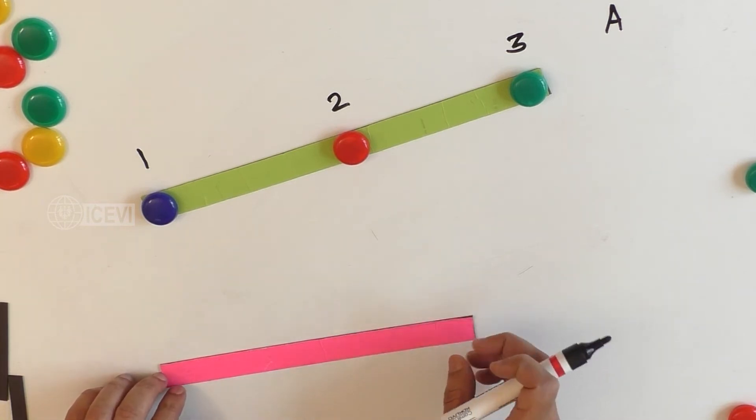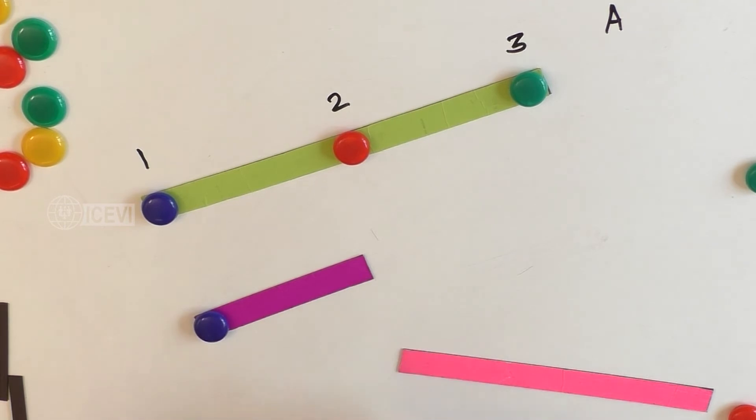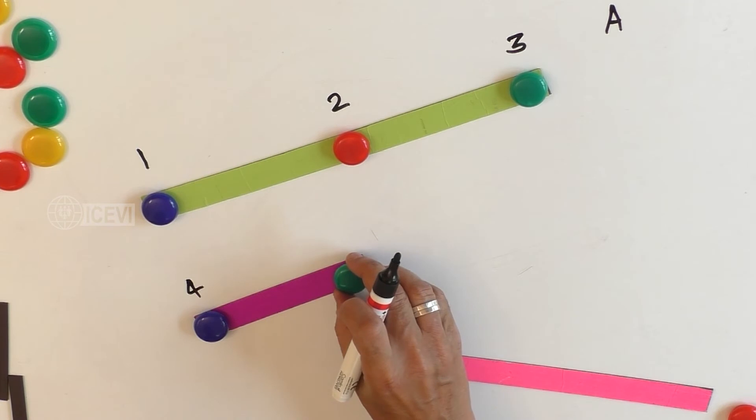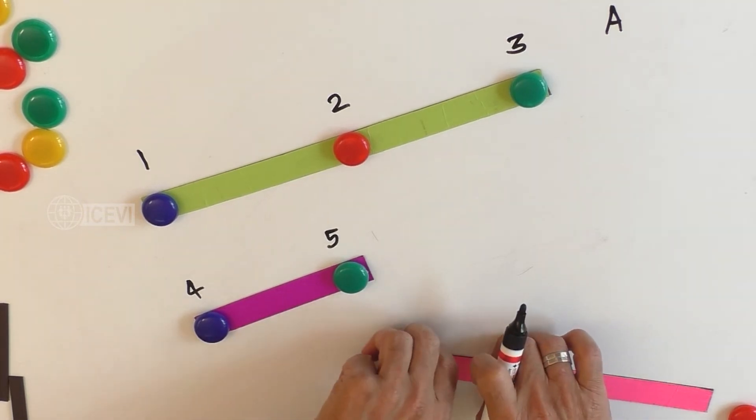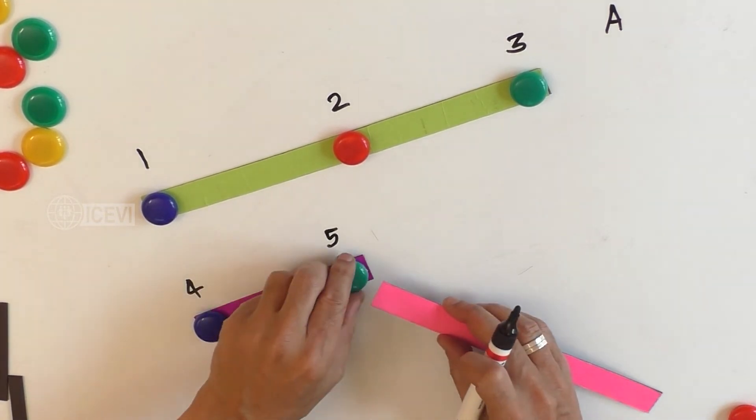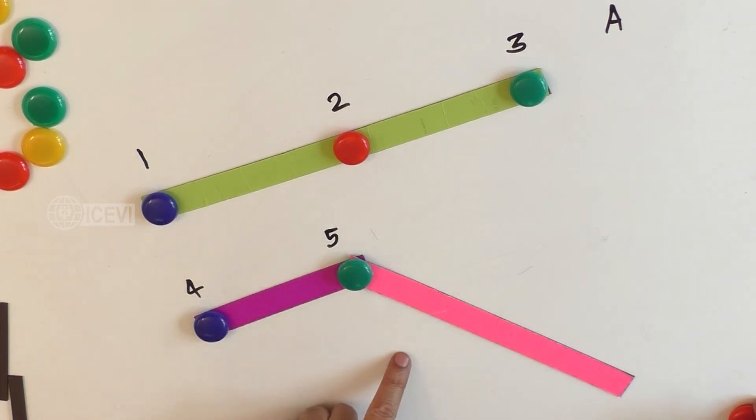Now let us take another line. In this line, points 4 and 5 are lying on the same line. Let us assume that there is one more line starting from point 5 and it is getting deflected downwards. Let us take another point 6 on the line which is deflecting from point 5.